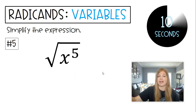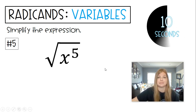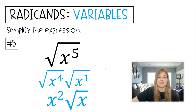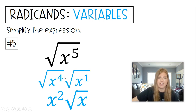Square root of x to the fifth — an odd exponent. This becomes the square root of x to the fourth times the square root of x to the first. We break one away from the five to make it a four. Square root of x to the fourth is x squared, and the square root of x to the first is just the square root of x.